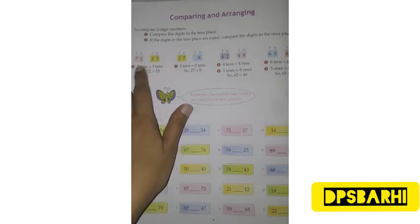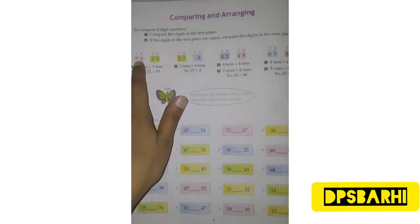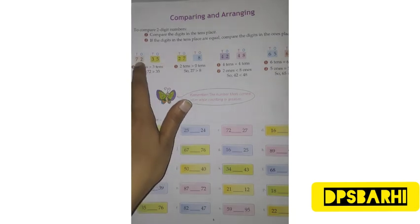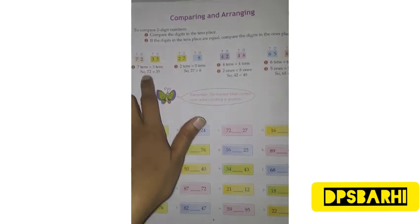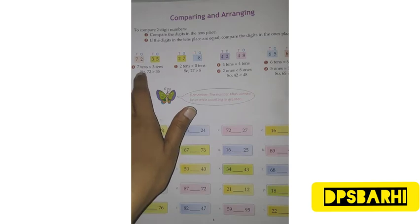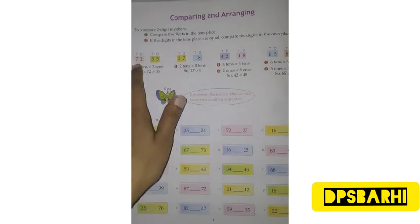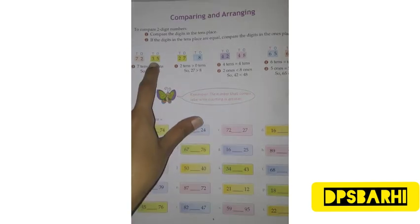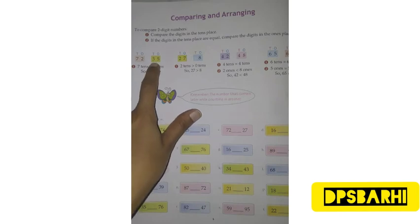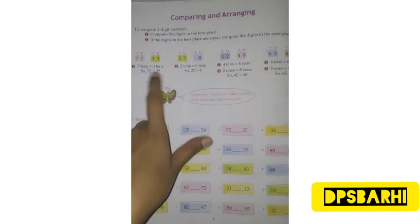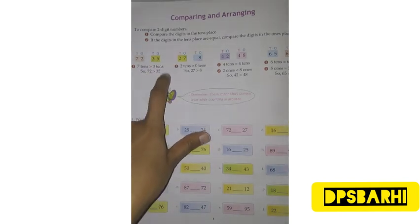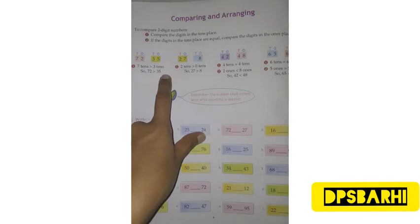We have seen that the tens place is 7 and the ones place is 5. The tens place is greater because 7 tens is 70. Here the tens place digit is 3, so that is 3 tens. Therefore 72 is greater than 35.